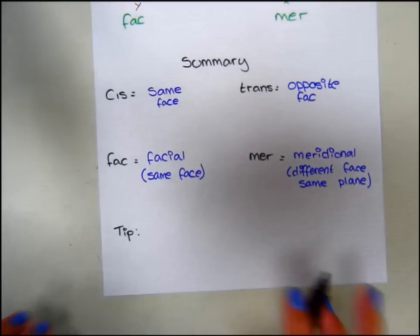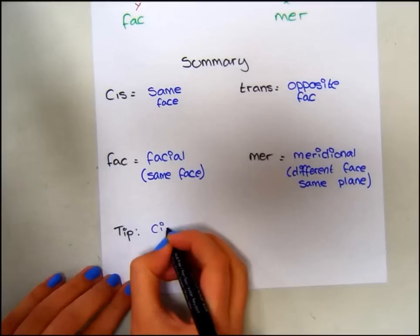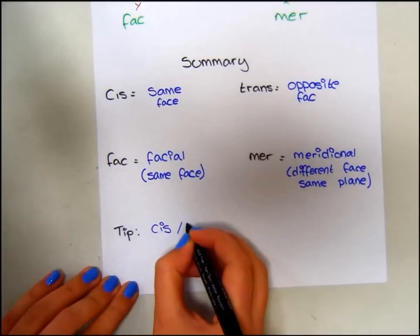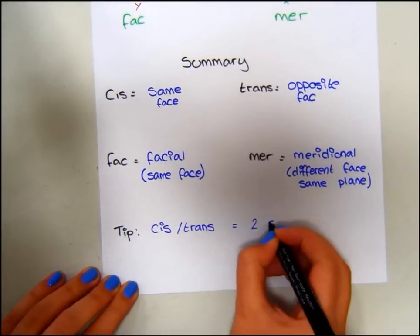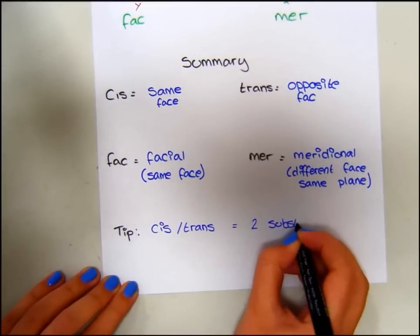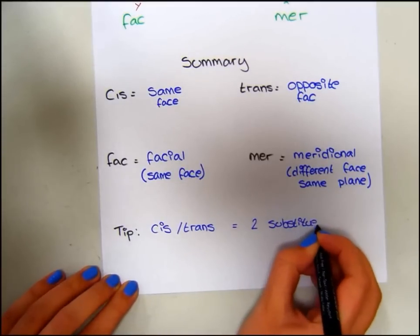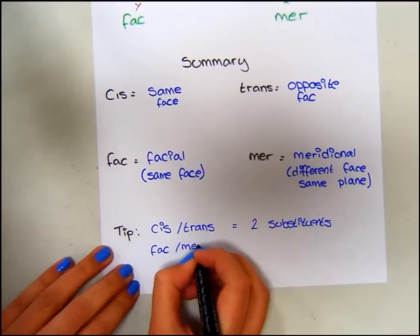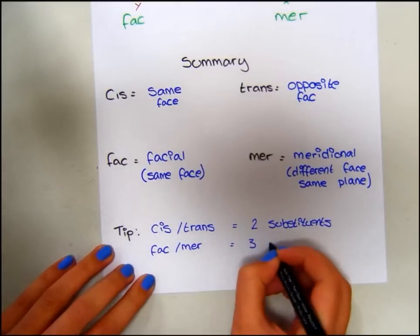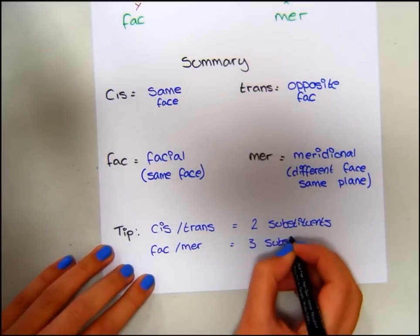And a tip to remember is that cis and trans are commonly used for two substituents, and fac and mer are used for three substituents.